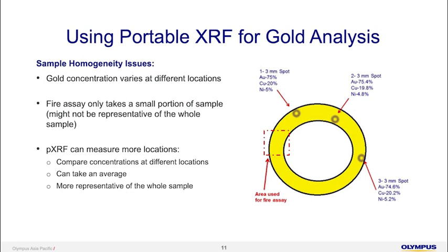Now I'll talk about using portable XRF for gold analysis. Because of sample homogeneity issues from the casting and melting process, a ring won't have very homogeneous surfaces. For example, with XRF, if we take three spots, one might give you 75%, the second 75.4%, and another 74.6%. You will not get exactly 75% at every single spot, because the manufacturing process is very difficult to control.